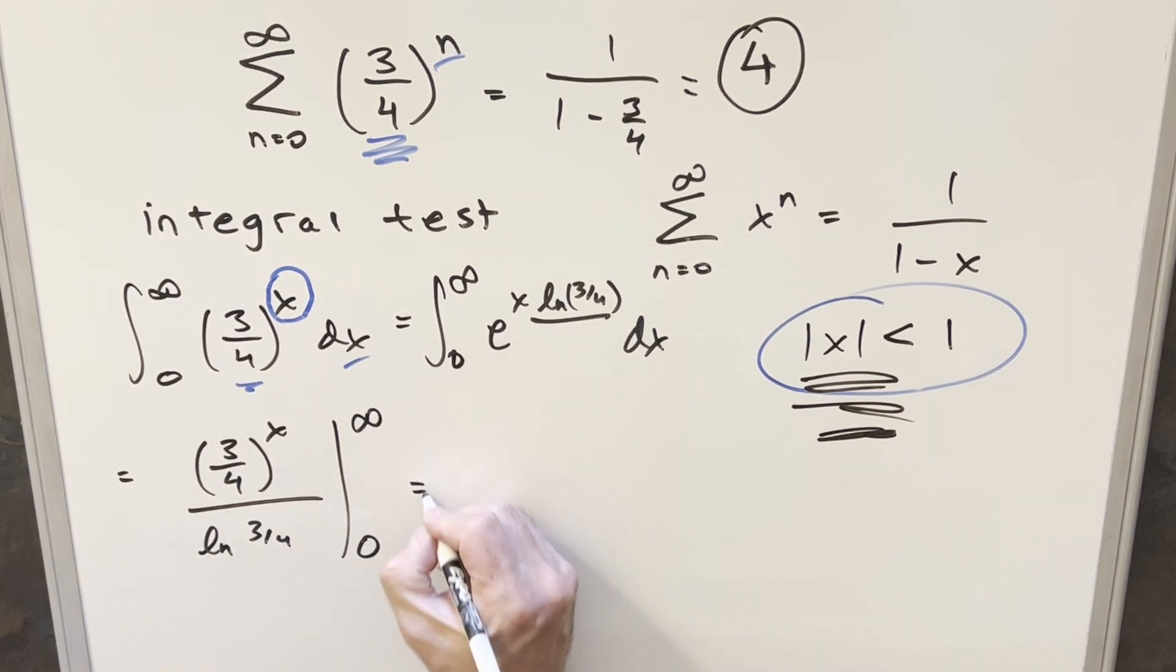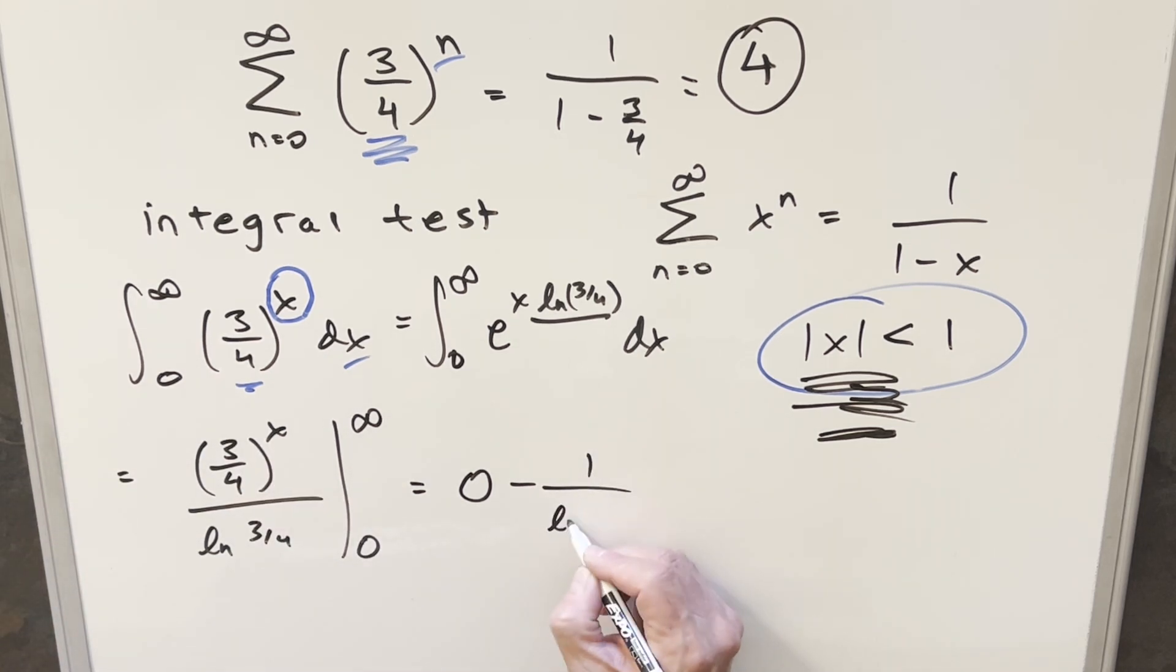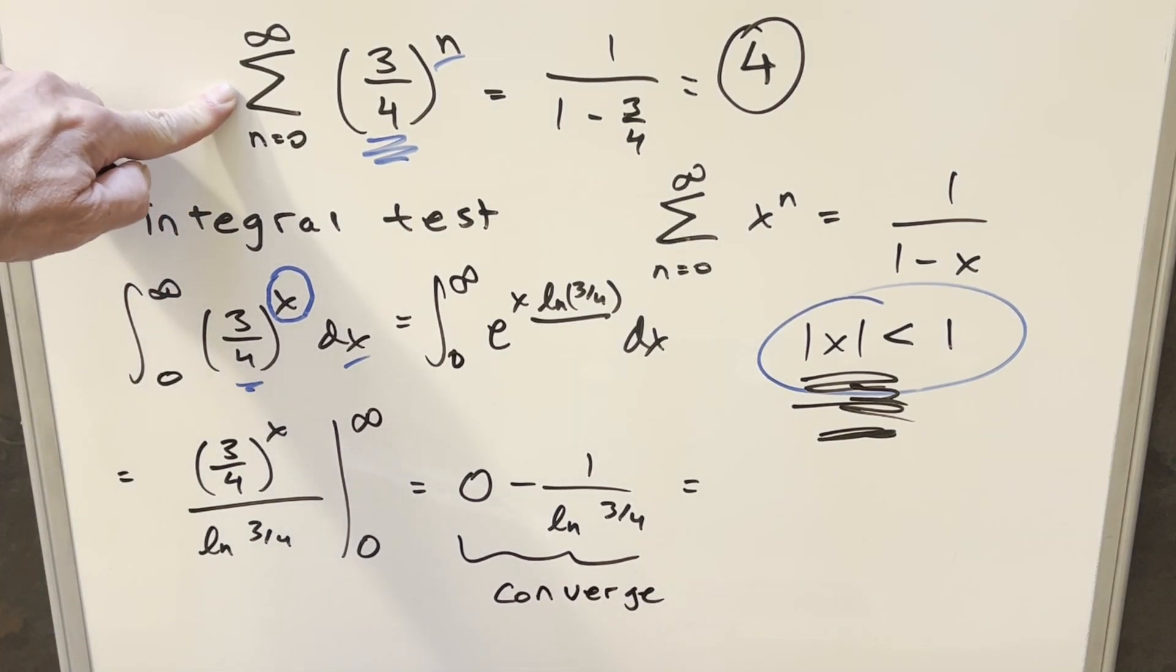Then we need to evaluate this thing from infinity to 0. First evaluating at infinity, this piece right here is going to 0. The reason it's going to 0, it all comes back to this right here. The key is that it's less than 1, so that's going to cause this to go to 0. And so that's our first piece here. Then for the second part, minus plug-in 0, the numerator is going to become 1, and we end up with 1 over ln 3 fourths. It doesn't really matter what this value is because the key is this is clearly going to be some finite value, and so this is going to converge. So we can also say that our series is going to converge.